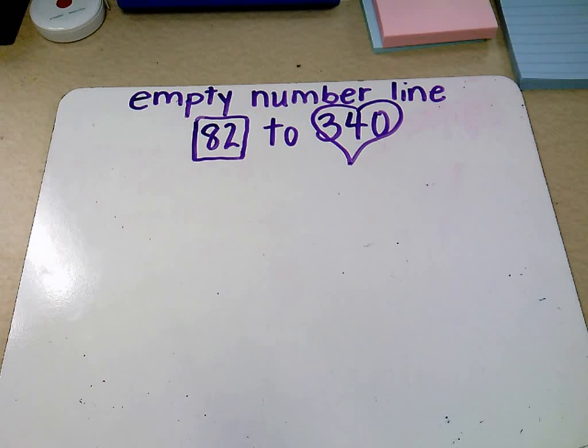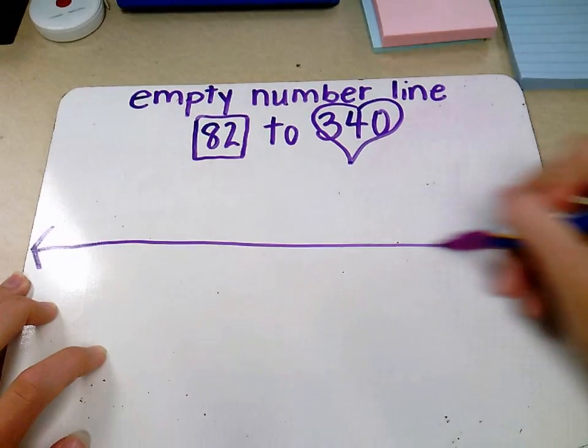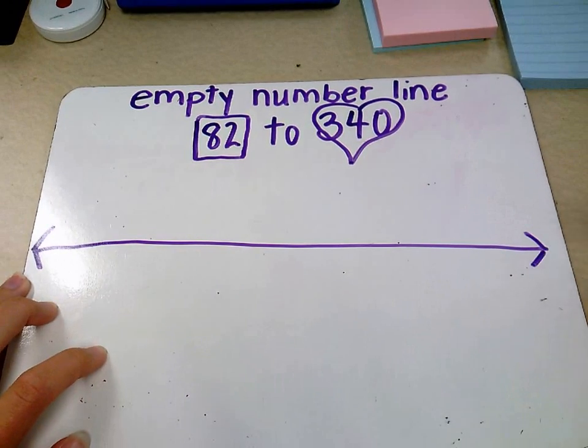So we want to start at 82 and what they can do is use an empty number line to help them get to their goal.